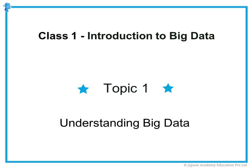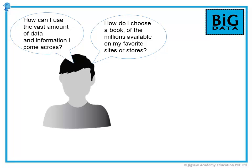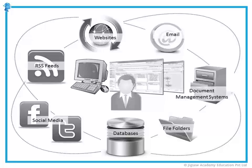In the first topic we discussed what is big data, its advantages and sources. Now we will look at the structuring and elements of big data. In your daily life you may have come across questions like: how can I use to my advantage the vast amount of data I come across? Which news articles should I read? How do I choose a book from the millions available? How do I keep myself updated on events taking place across the globe?